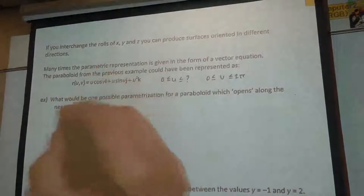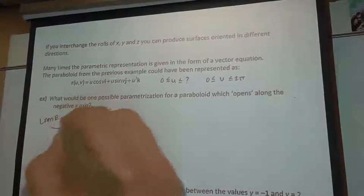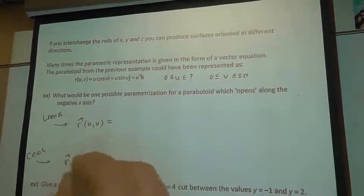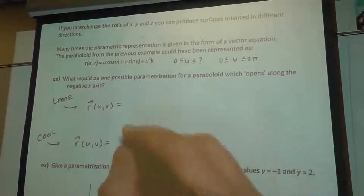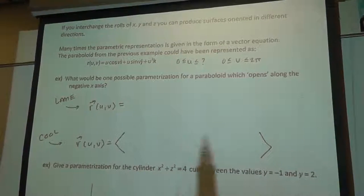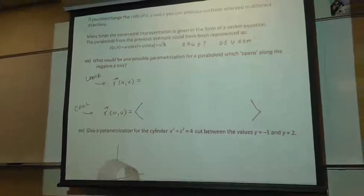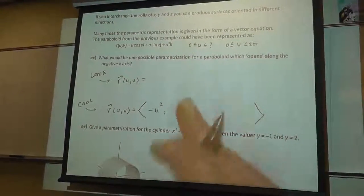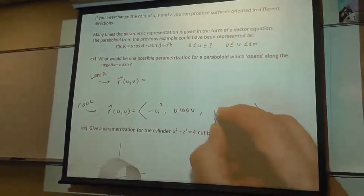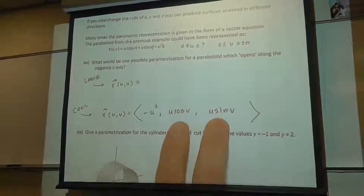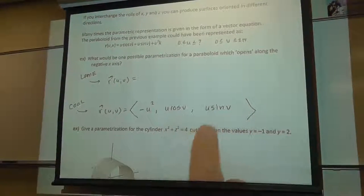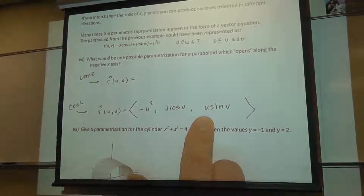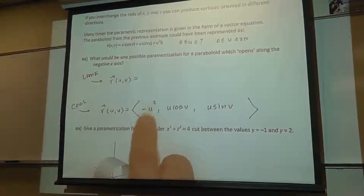There are two possibilities here. The lame one and the cool one — the cool one's the one we just did. Since it is a vector equation, I'm going to use the bracket i, j, k component form. We figured out that to get the negative x-axis direction, we use negative u squared on the x component, then pair u cosine v with y and u sine v with z. Does it matter who gets cosine or sine? No — the y component could be u sine v and u cosine v go with z. Either way, you still get a circular disk in the y-z plane.